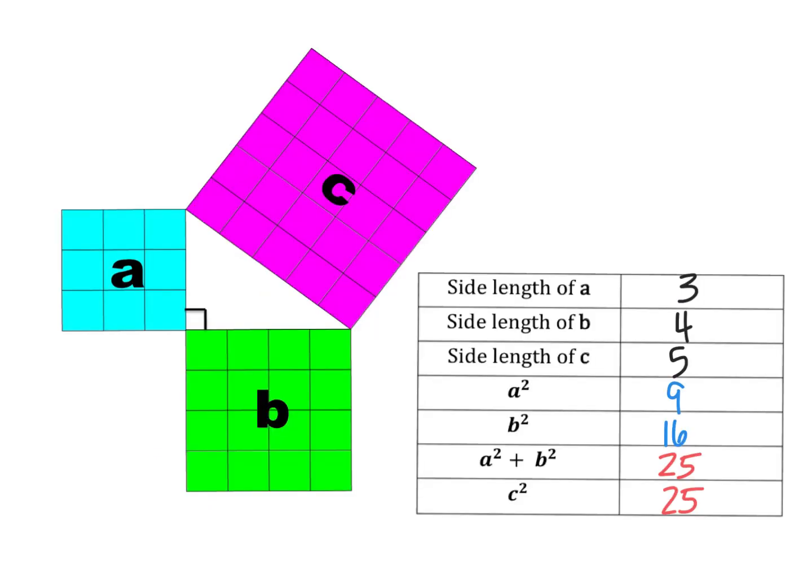Let's review what you learned yesterday in the Pythagorean Theorem investigation. Yesterday, you looked at a series of right triangles that were formed by three squares touching each other. When looking at the side lengths of each square, you probably noticed that when we square the side length of A, or find the area of A, square side length B, or find the area of B, the sum of those two areas is equal to the area of square C, or side length C squared.